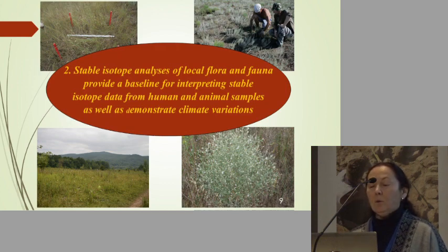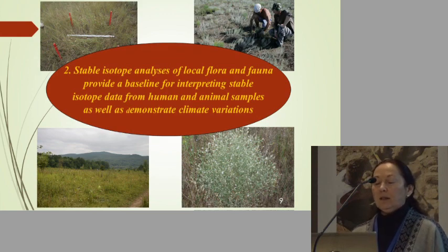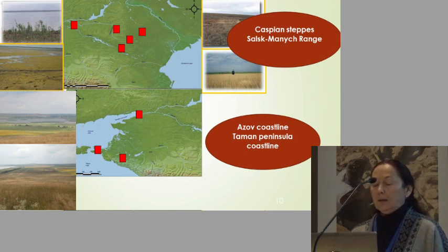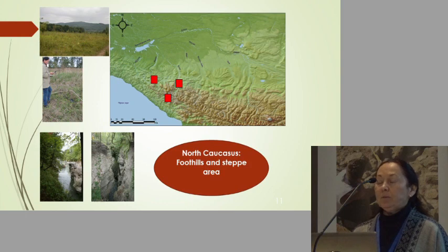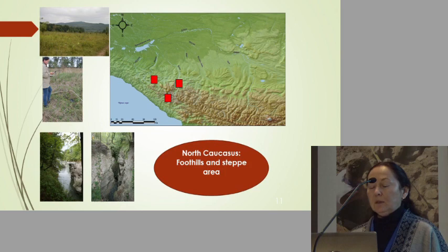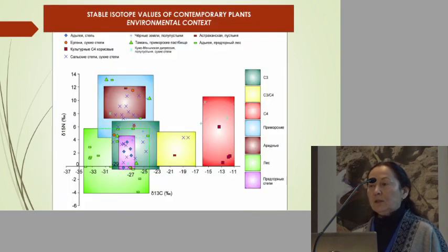That is why for many years we built the baseline for interpreting stable isotope data obtained from human and animal samples. Already for 10 years we have collected plants from different pastures located in the Eurasian steppe, and for comparison we also started to take samples from natural pastures in the Caucasus. At the moment we have a lot of isotope values for contemporary plants — we have a real environmental isotope context — and you can see that plant isotopes are very variable.